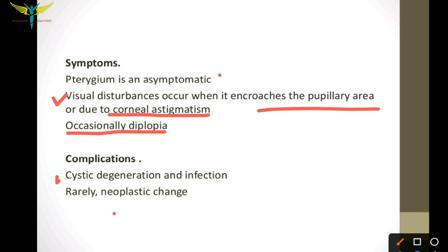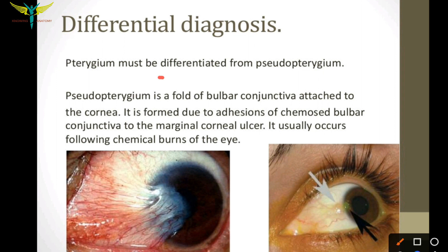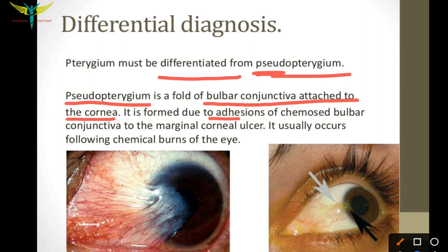Coming to the differential diagnosis: pterygium must be differentiated from pseudo pterygium. The word pseudo indicates false. The pseudo pterygium is a fold of bulbar conjunctiva attached to the cornea. It is formed due to adhesions of the chemosed bulbar conjunctiva to the marginal corneal ulcer, and it usually occurs following chemical burns of the eye. The bulbar conjunctiva forms adhesions when the ulcer occurs on the cornea, leading to formation of a pseudo pterygium.